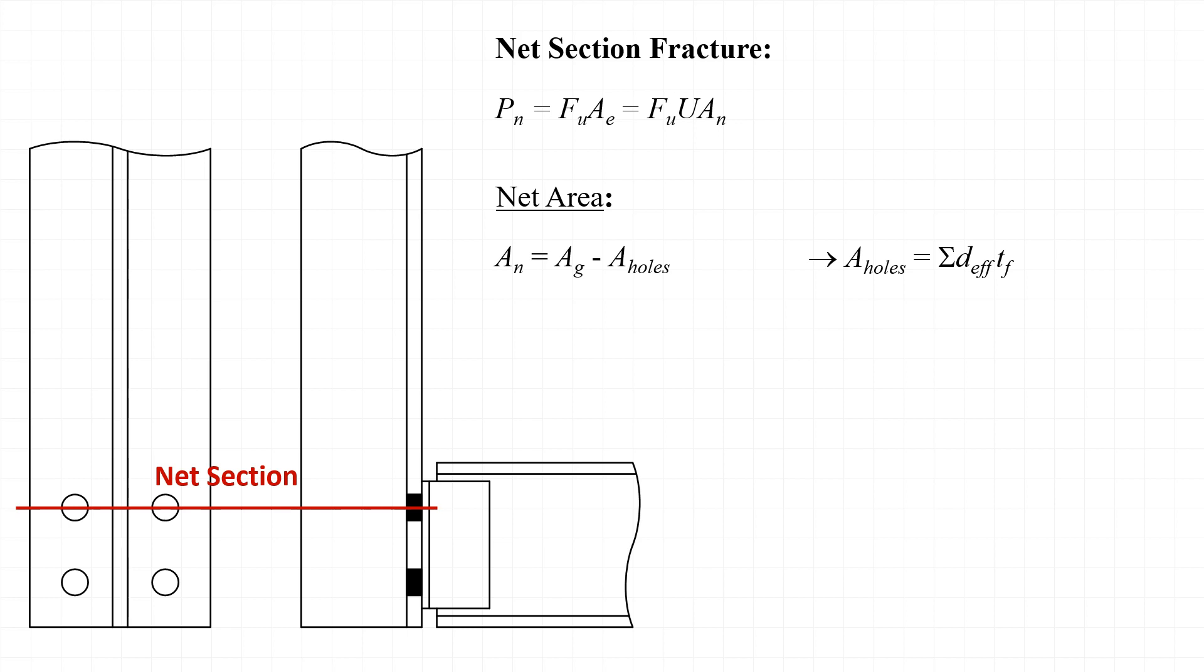And when we calculate the net area, we take the gross area of the section and subtract out the area of the holes on that section that are made to accommodate the bolts. The area of the holes is taken as the sum of the effective diameters of the bolt holes times the flange thickness.